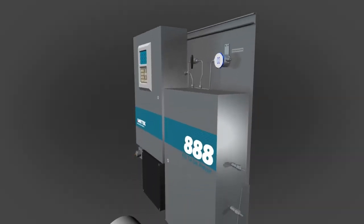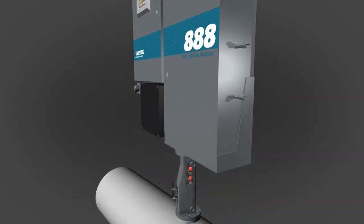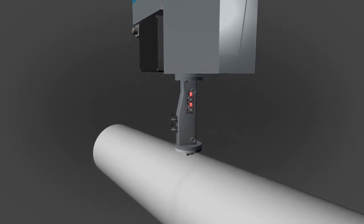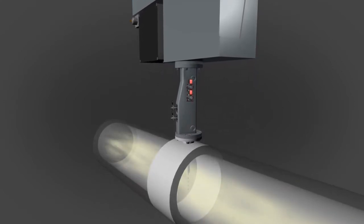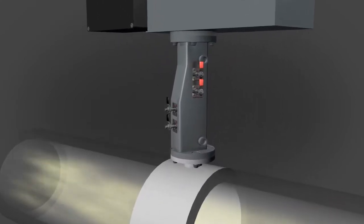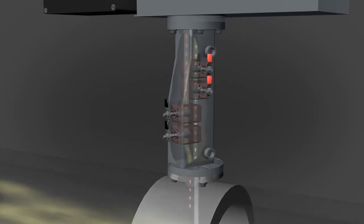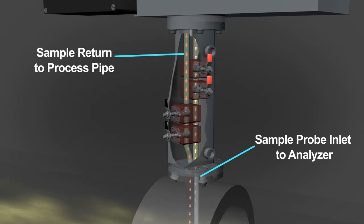The Amtech Model 888 tail gas analyzer was designed with safety in mind. The analyzer requires very little regular maintenance and can be easily isolated from the process. The predictive diagnostics provide information that allows scheduling of maintenance for plant shutdown periods.